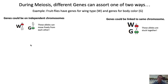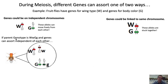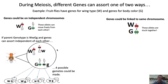Now, this might seem like a small difference, but let's say that a parent fly is a heterozygous genotype and its genes are able to assort independently of each other — that is, all the genes are on separate chromosomes. Well, when it comes time for this parent to make gametes during meiosis, there are four possible gametes that this parent could make: it could donate both dominant alleles, both recessive alleles, or one dominant and one recessive, or vice versa.